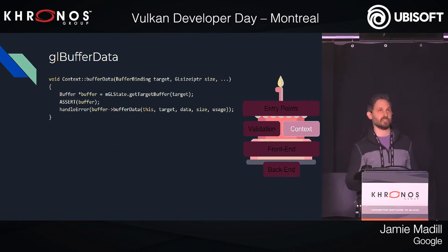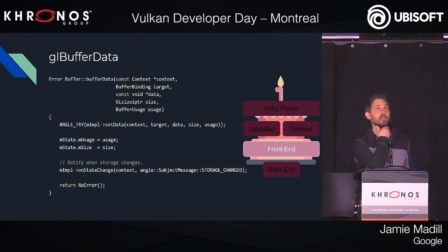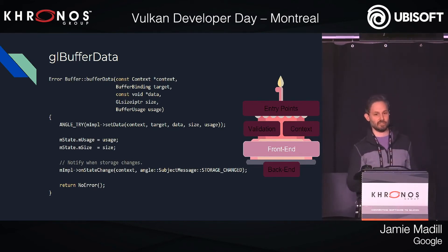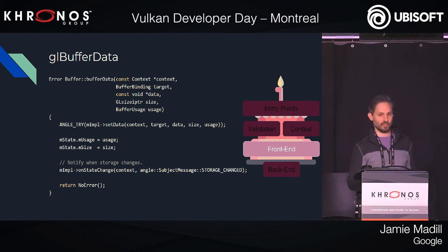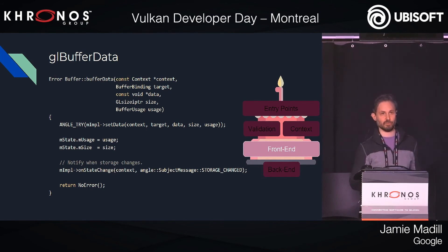Here we are in the context — it doesn't do much, it just handles the error that could be generated by the state tracking layer and buffer. In the buffer class, the first thing it does is call into the implementation via a virtual call, which will vary depending on what back end you're running. After that, if it succeeds, it updates the state of the buffer and notifies any objects that depend on the buffer state that the state has changed. This is especially important for caching validation — you want to redo as few computations as possible when you're validating.